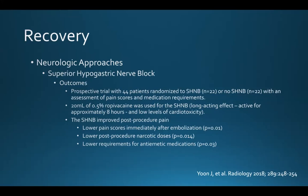More recently, Yoon published their experience in 2018. This was a prospective trial with 44 patients randomized to either receive a superior hypogastric nerve block or not, assessing pain scores and medication requirements. In this study, 20 ml of 0.5% ropivacaine was used for the nerve block because of its long-acting effect, active for approximately 8 hours, and associated with low levels of cardiotoxicity. They showed that the nerve block improved post-procedure pain, with lower pain scores immediately after embolization, lower post-procedure narcotic doses, and lower requirements for anti-emetic medication.